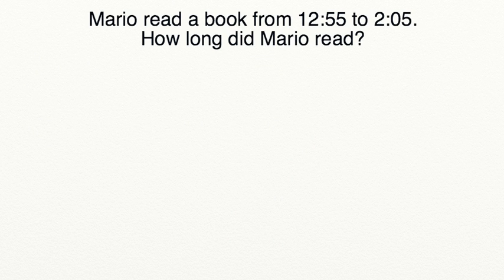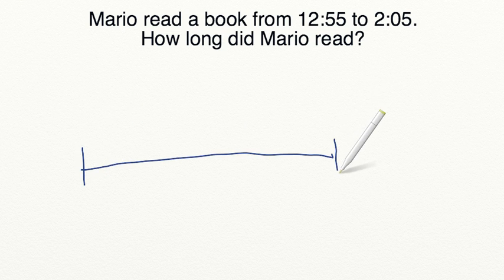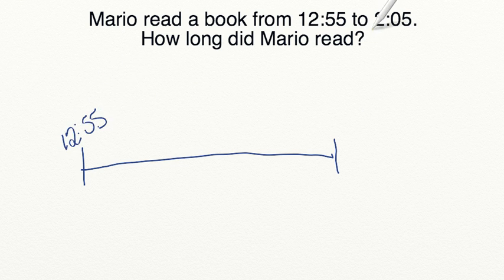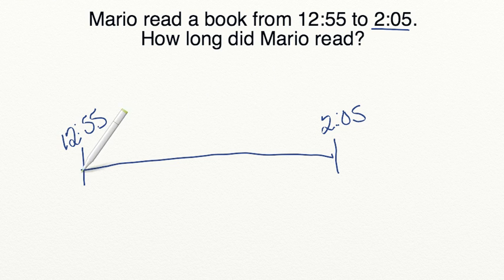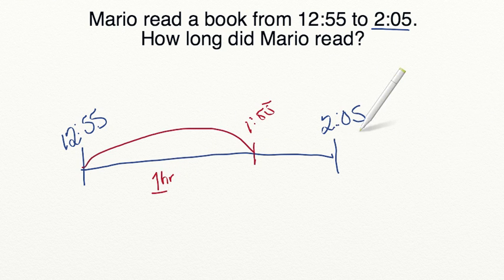Let's practice a word problem together using a number line. Mario read a book from 12:55 to 2:05. How long did Mario read? Let's set up our number line with start time 12:55 and end time 2:05. From 12:55 to 1:55 is one complete hour — I'll make sure to write in the units. I can't add another complete hour without going past 2:05.